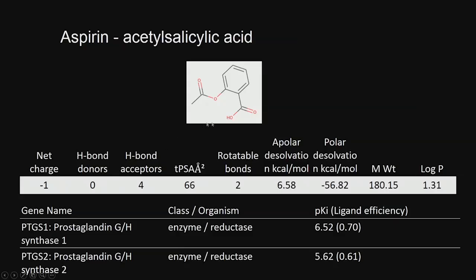The most well-known and widely used drug is aspirin. It is called acetyl salicylic acid — we have the salicylic acid and the acetyl group present. Aspirin is used for pain and fever, and nowadays it is even being prescribed for reducing the viscosity of the blood, so it is called a blood thinner.